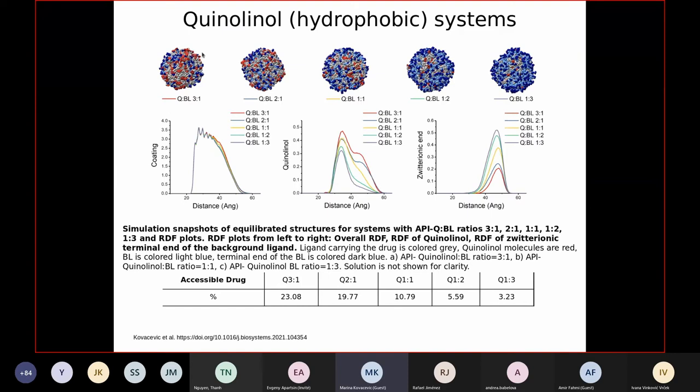However, even at the highest initial concentration of the ligand that carries the drug, we can see that this surface is more gray than red, which means that the ligand is actually exposed at the surface rather than the drug. The drug gets hidden under the surface. And if we pay attention to the blue color, which represents the background ligand, we can see that it dominates the surface, and we can assume that our drug is hidden somewhere between.